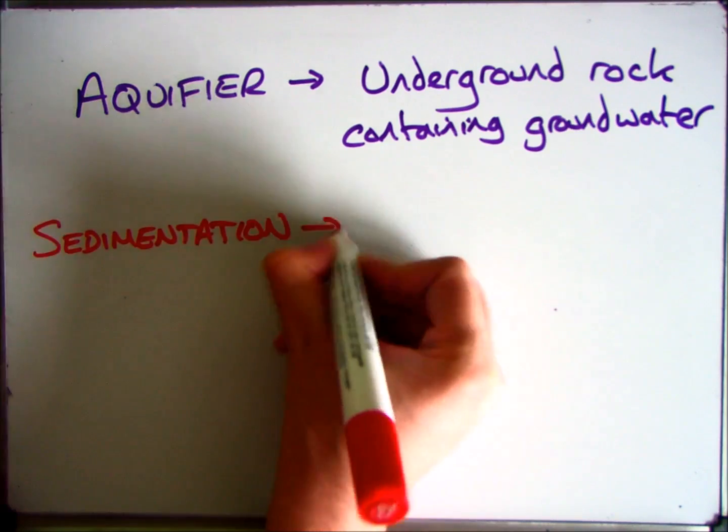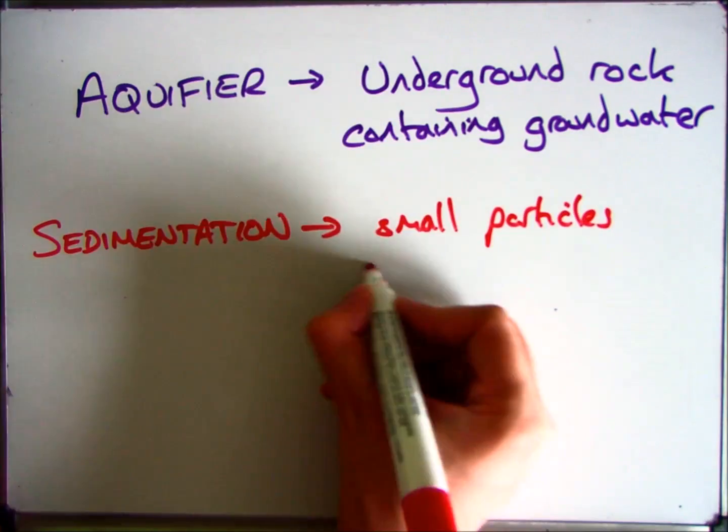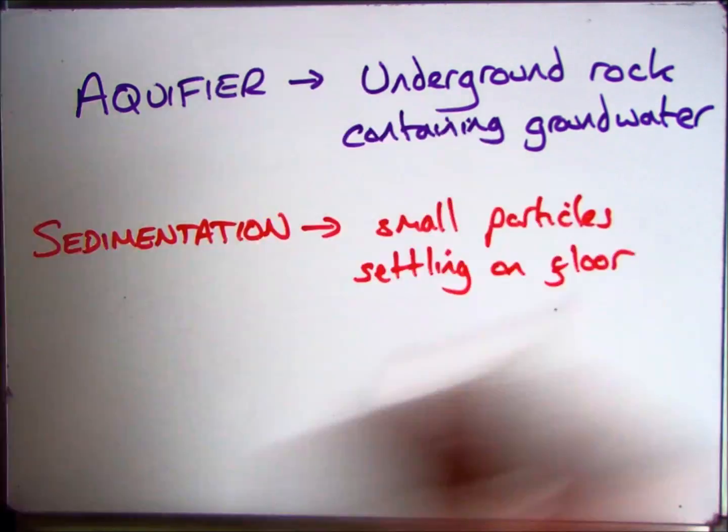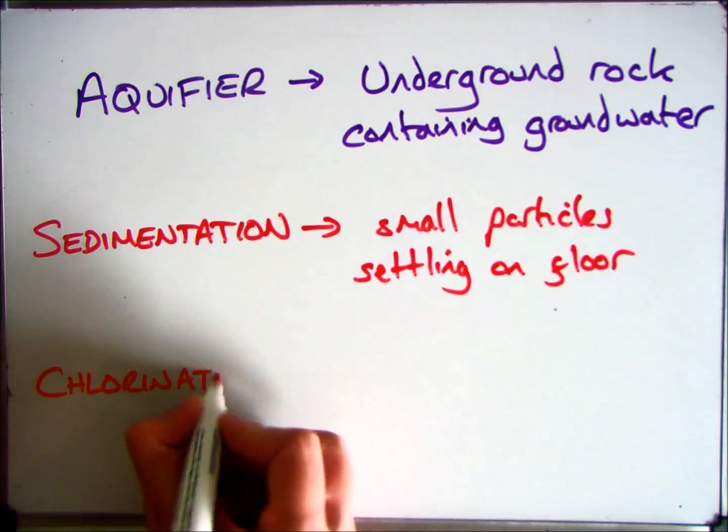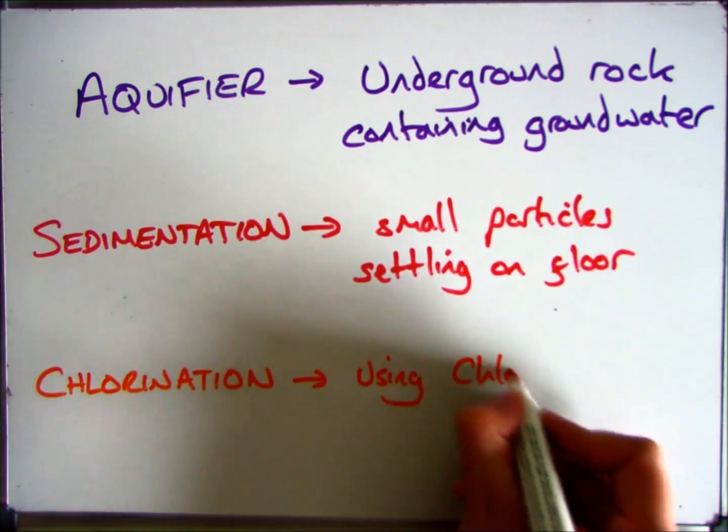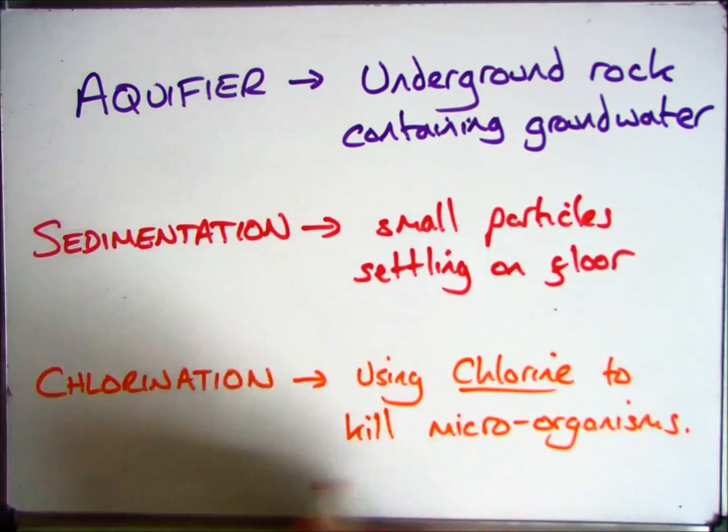The second one is sedimentation, which is little bits of rock, little pieces that are settling on the bottom of a river or somewhere else. And then finally chlorination, which is the use of chlorine to kill microorganisms.